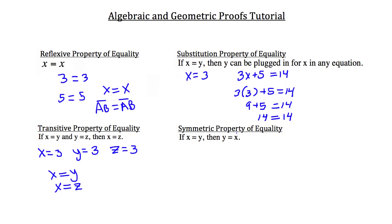The symmetric property of equality states that if x equals y, then y must also equal x. So if you have a figure in geometry and you say segment AB equals segment BC, you can also state the reverse: segment BC equals segment AB.